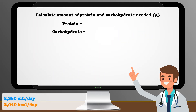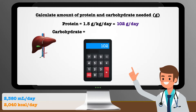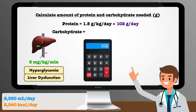The second step is to calculate the amount of protein and carbohydrate needed in grams. Because Marcus is in the post-operative period of a significant surgery, I feel comfortable providing 1.5 grams per kg per day. To get the number of grams, we multiply 1.5 by 68 to get 102. With carbohydrate, it is important to keep in mind that there is a maximum amount that the liver can metabolize at once. That value is somewhere around 5 mg per kg per minute. When you go above it, you significantly increase the risk for complications like hyperglycemia and liver dysfunction.